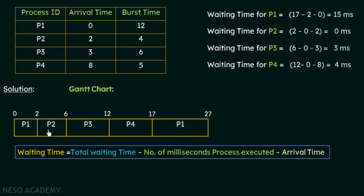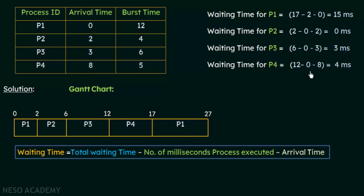For P3: the total waiting time is 6 milliseconds. It had not executed before that, and its arrival time is 3. So waiting time = 6 minus 0 minus 3 = 3 milliseconds. For P4: the total waiting time is 12 milliseconds, it had not executed before that, and its arrival time is 8. So waiting time = 12 minus 0 minus 8 = 4 milliseconds.